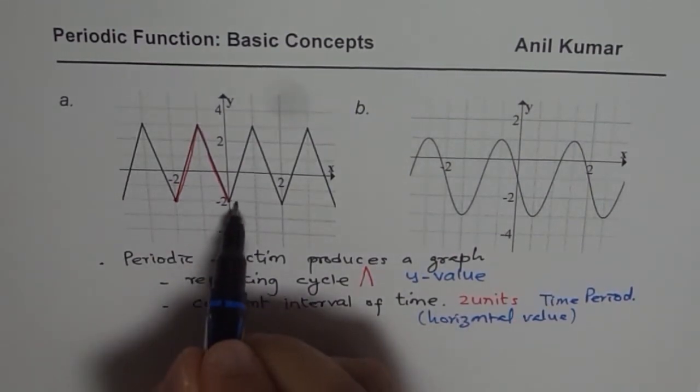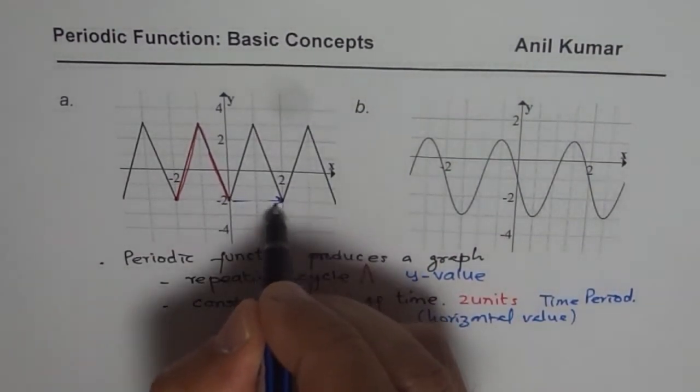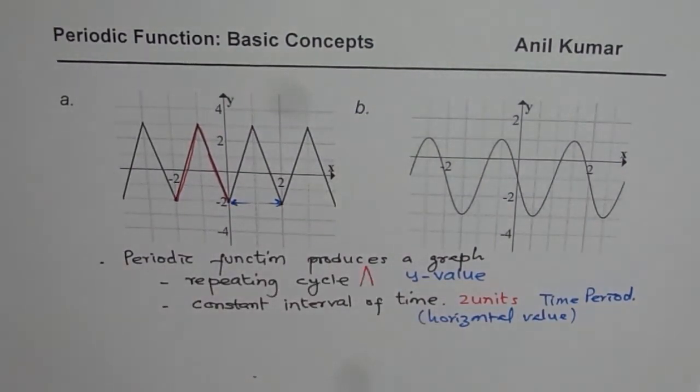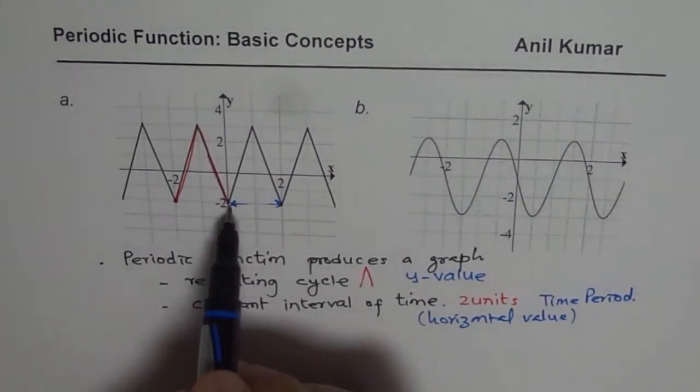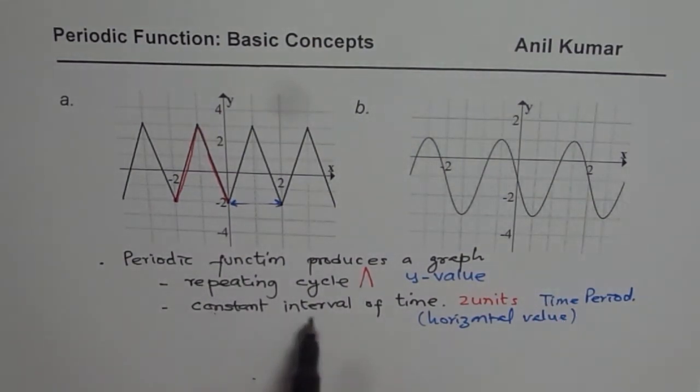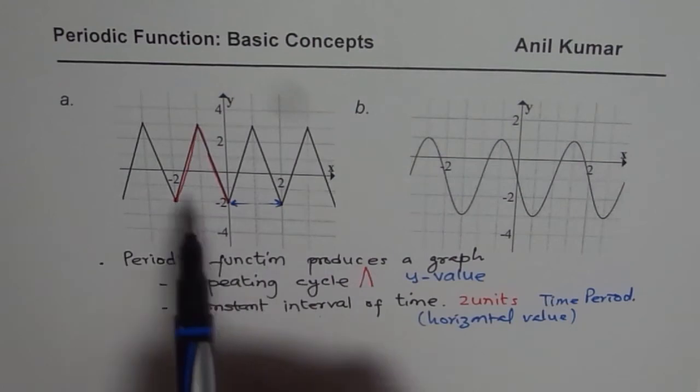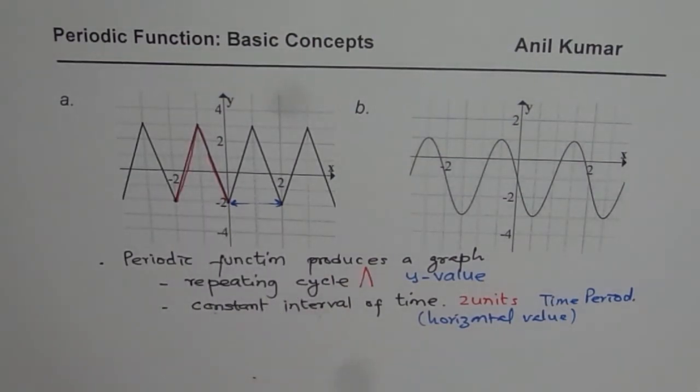So two units is that horizontal distance, which could be time or anything. So the independent variable is the constant interval we are looking for. And the pattern, which repeats, is called one cycle. So that is what is very important to understand.